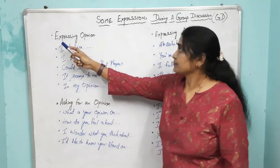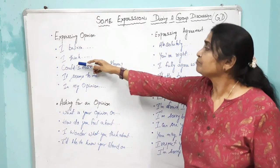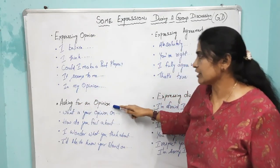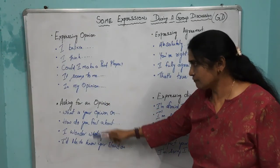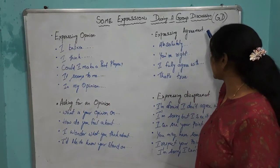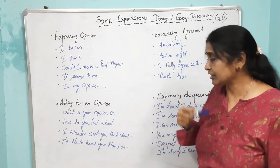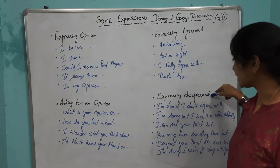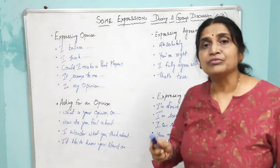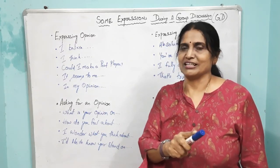So, now I have taught you four types of expressions: expressing your opinion, asking for an opinion, expressing agreement — four ways for each — and expressing your disagreement, with multiple methods to politely convey your disagreement.